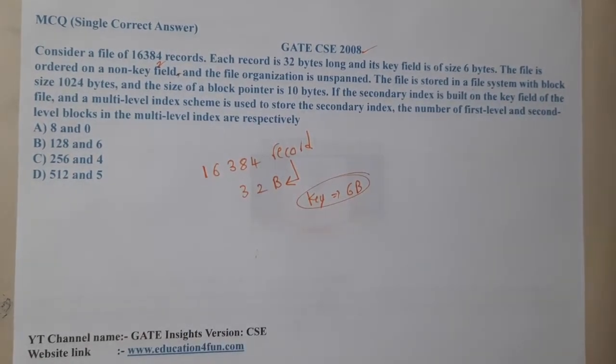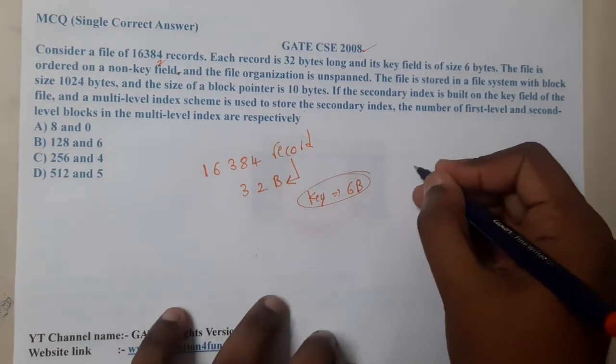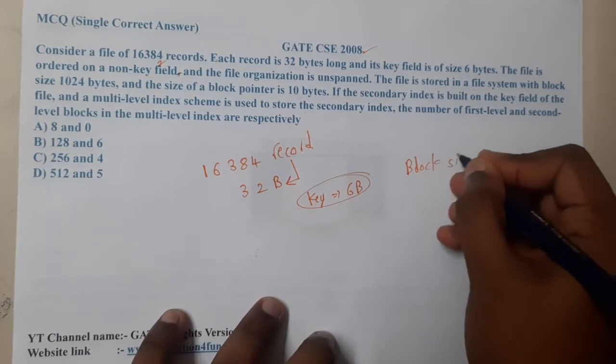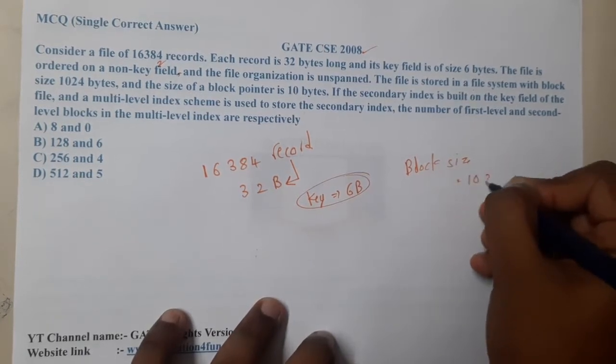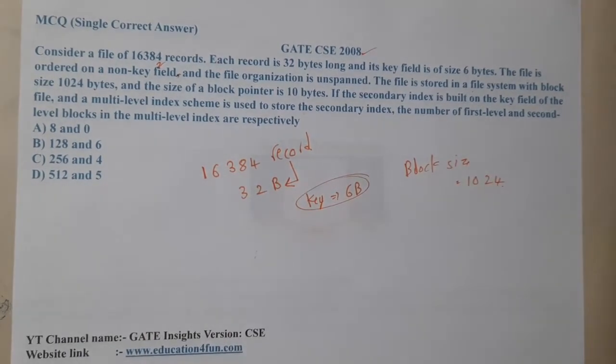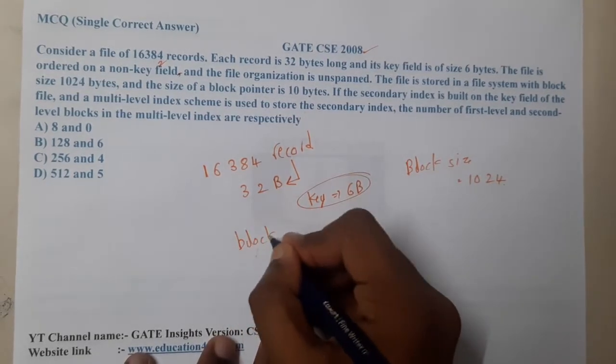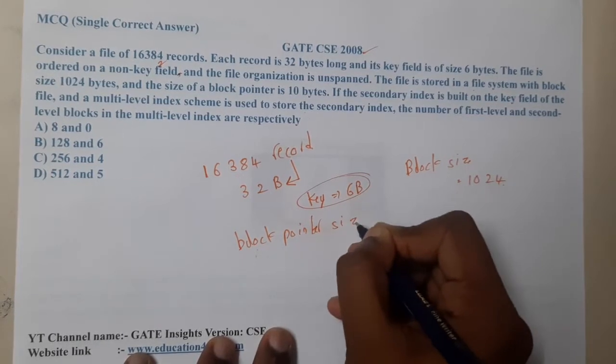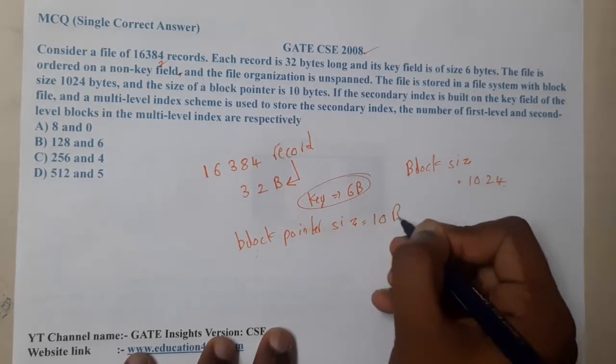The file is stored in a file system with block size 1024, so block size equals 1024. The size of the block pointer is 10 bytes.